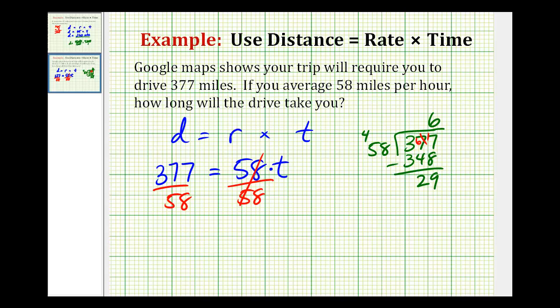So our quotient would be 6 hours with a remainder of 29. And we'll be talking about decimals in the next chapter. But just to introduce the idea, we can go ahead and put a decimal point here and move it up into our quotient. And then we can add another zero here on the right and then bring down a zero.